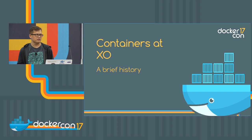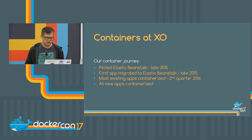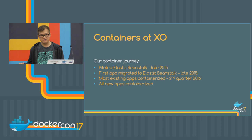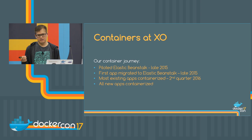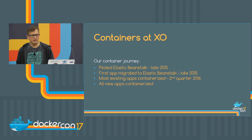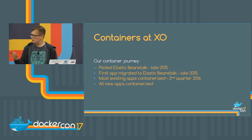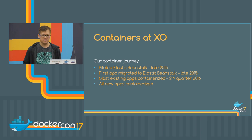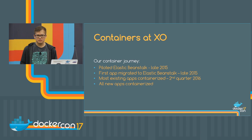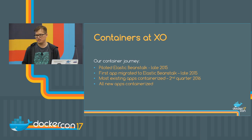To talk about how we got to containers at XO: we started with a legacy data center running Rails apps on VMware, and we wanted to move away from that. We decided to move to AWS and start containerizing things at the same time. We looked at Elastic Beanstalk, piloted it, and within about six months, we dockerized everything and threw it all onto Beanstalk. Pretty much everything on our sites is a Beanstalk of some sort.